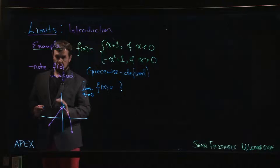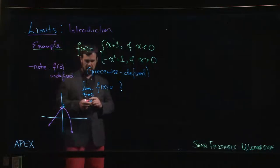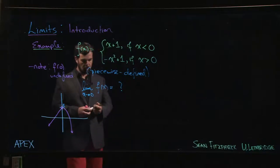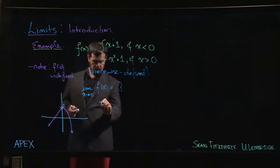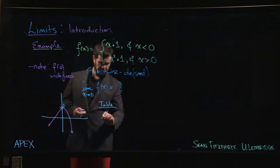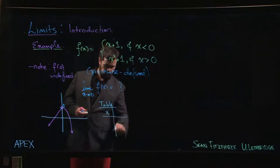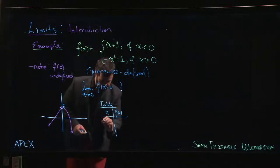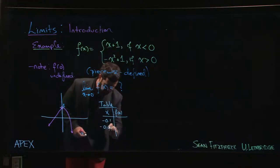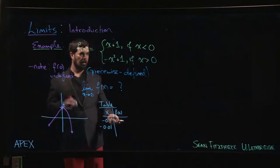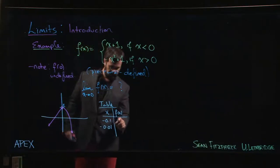The other thing you could do is you could look at a table. We could consider a table, so we could look at values of x and we could look at f of x. For negative values maybe we look at minus 0.1 or minus 0.01, 0.001 if you like.